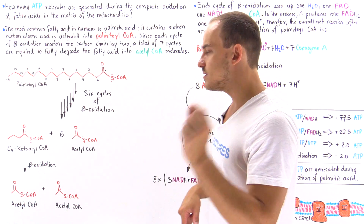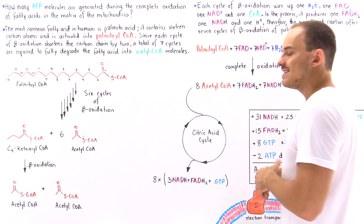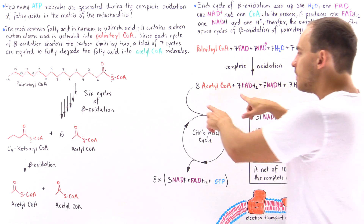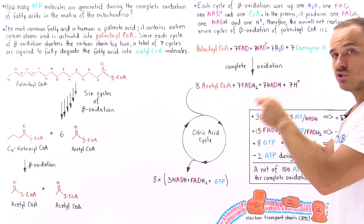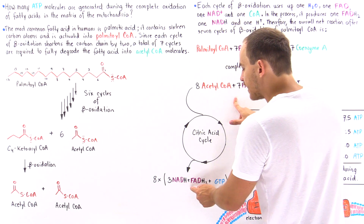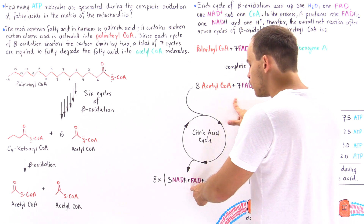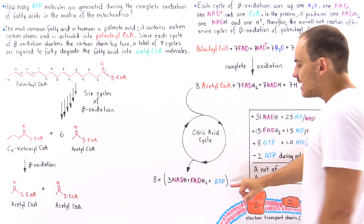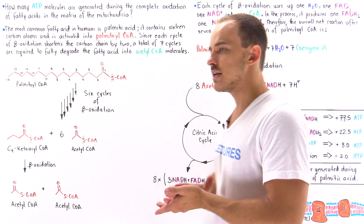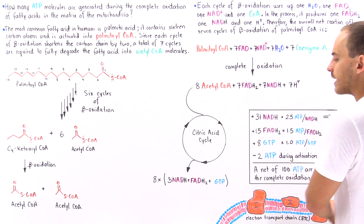A single acetyl coenzyme A molecule fed into the citric acid cycle generates 3 NADH molecules, 1 FADH2 molecule, and 1 GTP molecule. Because we have 8 acetyl coenzyme A molecules entering the citric acid cycle, we generate a total of 24 NADH, 8 FADH2, and 8 GTP molecules. The GTP molecules are transformed into ATP via a specific enzyme in our cells, and the NADH and FADH2 proceed to the electron transport chain.